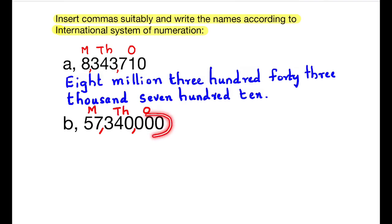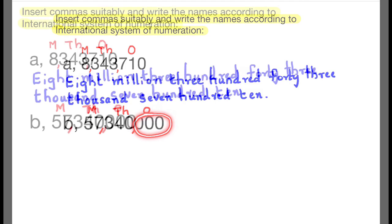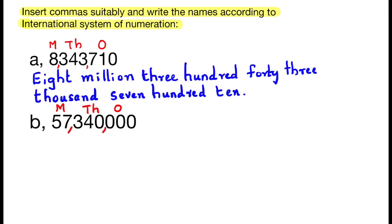Here you can notice that the ones period has only zeros in it, so we ignore that period while reading the number. The number name is fifty-seven million, three hundred forty thousand.